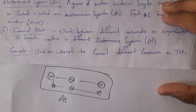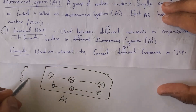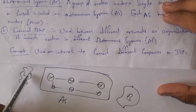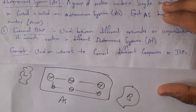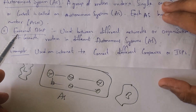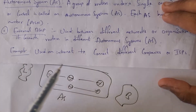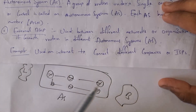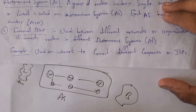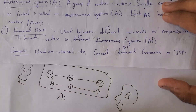For example, one software company is in Hyderabad and another software company is in Bangalore — these two networks will communicate to each other by using autonomous systems. This is an example of external BGP, where two different networks communicate to each other through autonomous systems. External BGP uses the internet to connect different companies or different internet service providers; for example, one company using Airtel internet and another using Jio internet can still communicate to each other using autonomous systems.